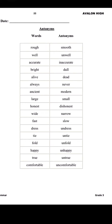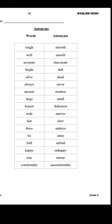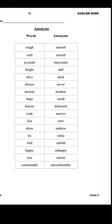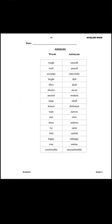Alive, dead. Always, never. Ancient, modern. Large, small. Honest, dishonest. Wide, narrow. Fast, slow. Dress, undress. Tie, untie. Fold, unfold. Happy, unhappy. True, untrue. Comfortable, uncomfortable. These are the words — on the left side and right side — and you have to learn all their antonyms.